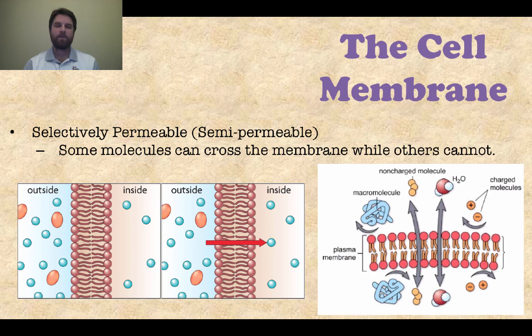And the cell membrane is actually what we would call selectively permeable, or semi-permeable. That's the same thing. So some molecules can cross, some cannot. So that just depends on what kind of molecule you are, and if you have a charge on you, or if you're too big or too small. So you can see in that picture on the bottom right there.